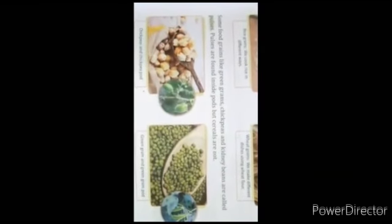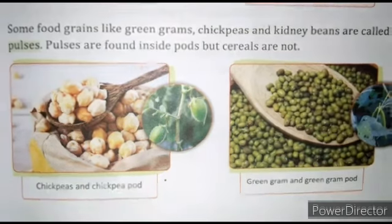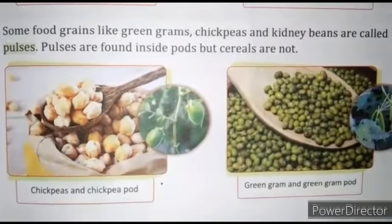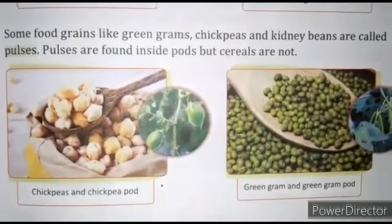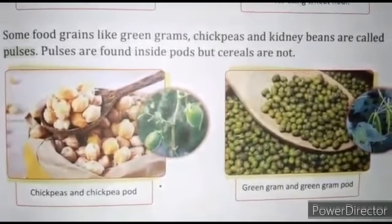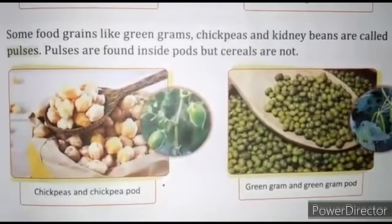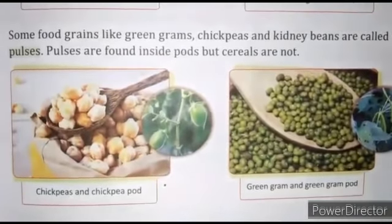Food grains like green gram, chickpea and kidney beans are called pulses. Now pulses are found inside pods but cereals are not. There are two examples you can look over the picture.